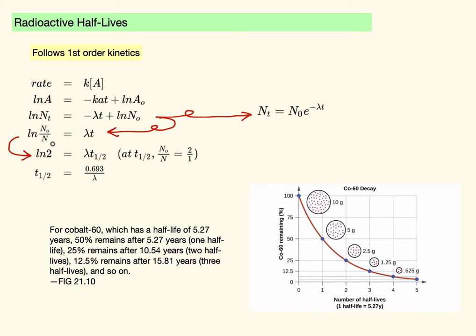When half of a material has decomposed, this number is going to be one half of that one. In other words, this ratio is going to be two. So your slope times t is going to equal log of two at your half-life. Well, this is just a number. So you can also rearrange this. The half-life equals 0.693 over lambda. With this little kit of equations, you can work almost any kinetics problem relating to radioactive decay.